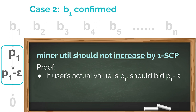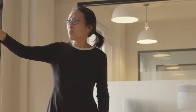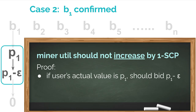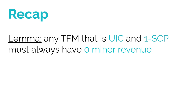In the 'revenue doesn't increase' direction for the middle region: if the user's true value is p1 and it bids p1, utility is zero (confirmed, pays p1). If it bids p1 minus epsilon, it's unconfirmed and utility is still zero — indifferent. But the miner prefers the lower bid. So the user can deviate to help the miner. This completes the proof of the key lemma: for any mechanism that is UIC and 1-SCP, miner revenue must always be zero.